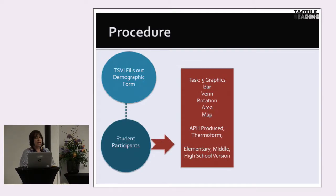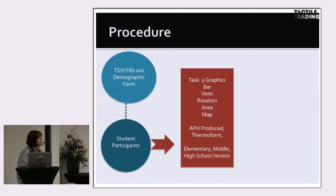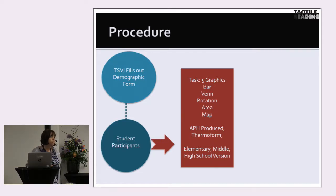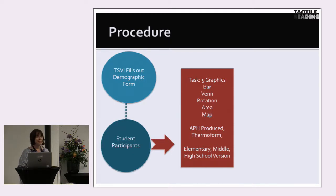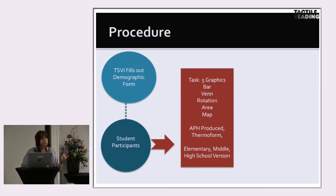The students were asked to complete five tasks using graphics. Four were related to math: a bar graph, a Venn diagram, a rotation item, and a geometry area problem. There was also a map. They were produced by the American Printing House for the Blind to control for quality, and were on thermoform so they stood up over time. I had a version of each graphic type for elementary, middle, and high school students — so various complexity levels, but the same graphic type for each group.